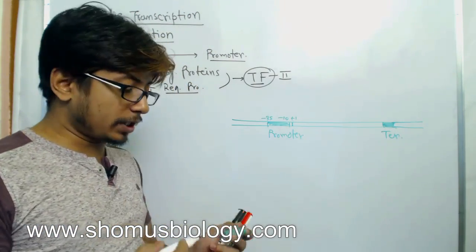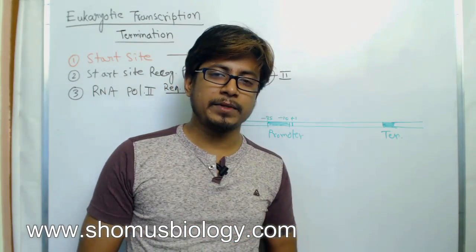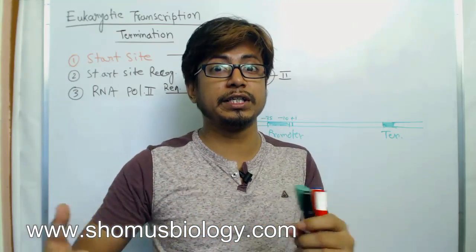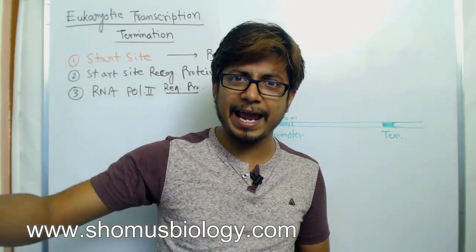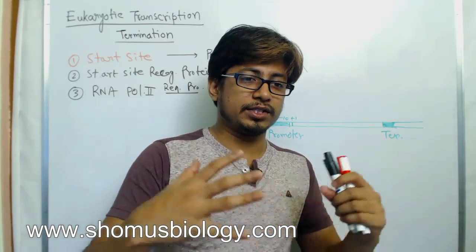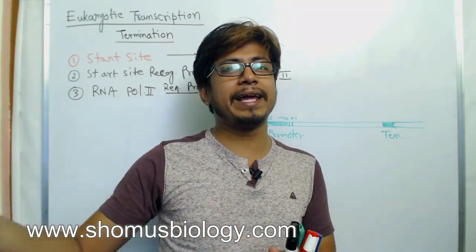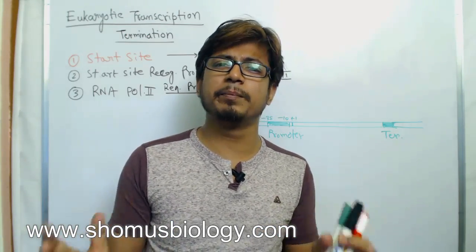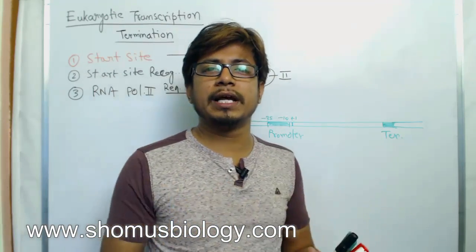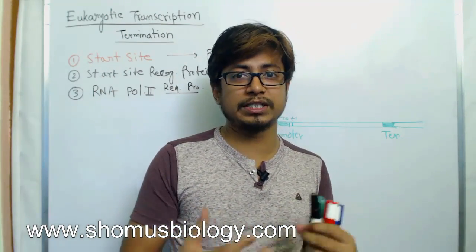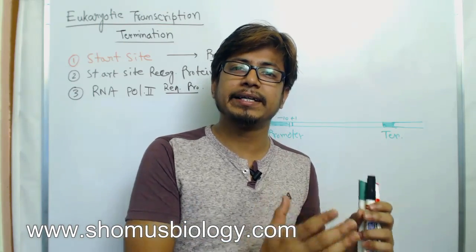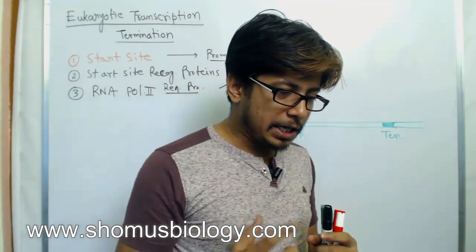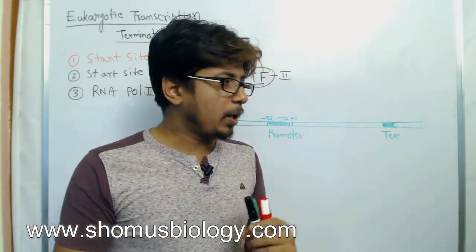In prokaryotic transcription, the termination site is specific. Those termination sites have consecutive GC sequences followed by a U, which allows them to form a stem-loop structure. The weak bonding of the U causes dissociation of the mRNA. In some cases they also utilize a helicase known as Rho for the separation of the growing mRNA from the template DNA.